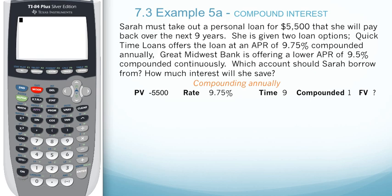In example 5A, we will look at compound interest using the TVM solver. Sarah must take out a personal loan for $5,500 that she will pay back over the next nine years. She's given two loan options: QuickTime Loan offers the loan at an APR of 9.75% compounded annually, and Great Midwest Bank is offering a lower APR of 9.5% compounded continuously. Which account should Sarah borrow from, and how much interest will she save? Let's go ahead and compare the two accounts.